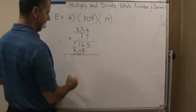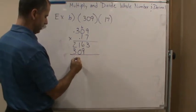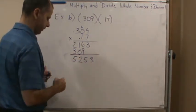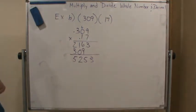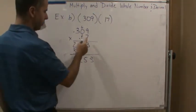And now I'm going to add down. So this is going to give me what? 5253. Now, I've got to figure out where to put my decimal point, right? So I've got 1,